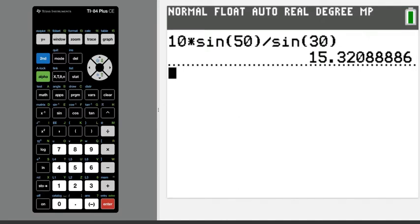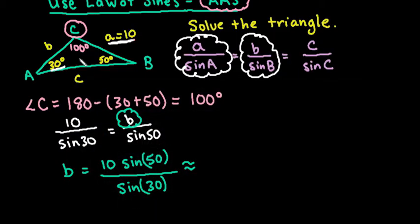Just round to however many places that your text tells you to. If it doesn't say, the more places is always more precise. Typically we round to two decimal places, one to two decimal places more than the given information. So since the given side was in whole numbers, I'm just going to round to two decimal places. So I get 15.32.